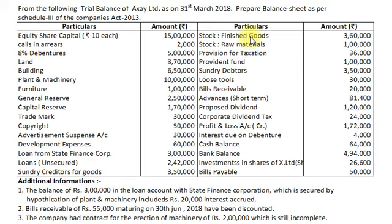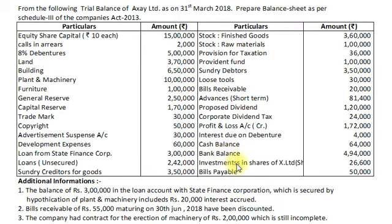Further items include: Stock of Finished Goods, Stock of Raw Materials, Provision for Taxation, Provident Fund, Sundry Debtors, Loose Tools, Bills Receivable, Advances for Short Term, Proposed Dividend, Corporate Dividend Tax, Profit and Loss Account Credit Balance, Interest Due on Debentures, Cash Balance, Bank Balance, Investments in Shares of Axe Limited, and Bills Payable.